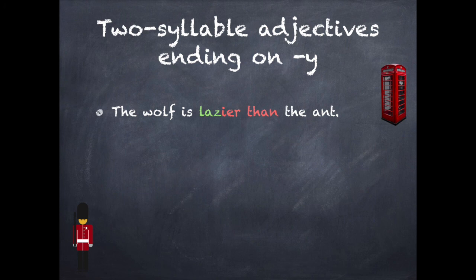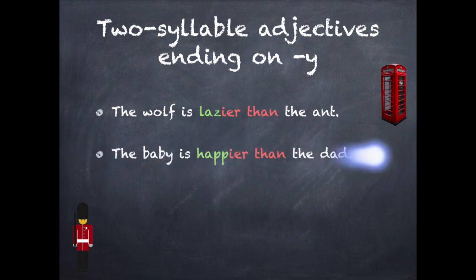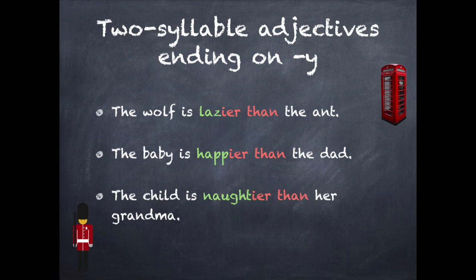For the two-syllable adjectives ending on y, the gulf is lazier than the ant. Look here that we change the y on lazy for an i. The baby is happier than the dad, and the child is noisier than her grandma.